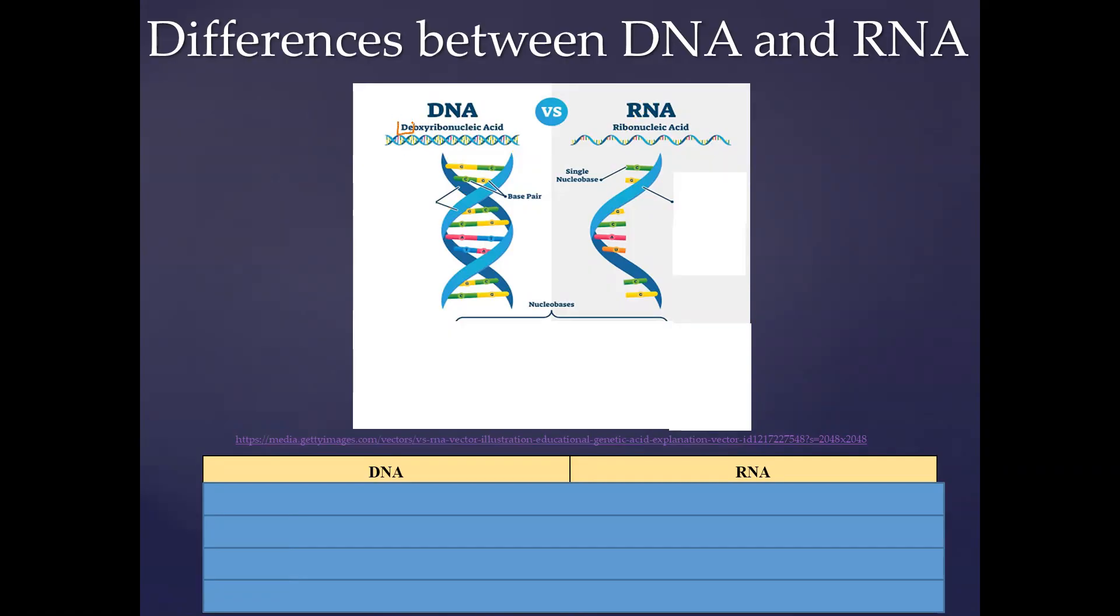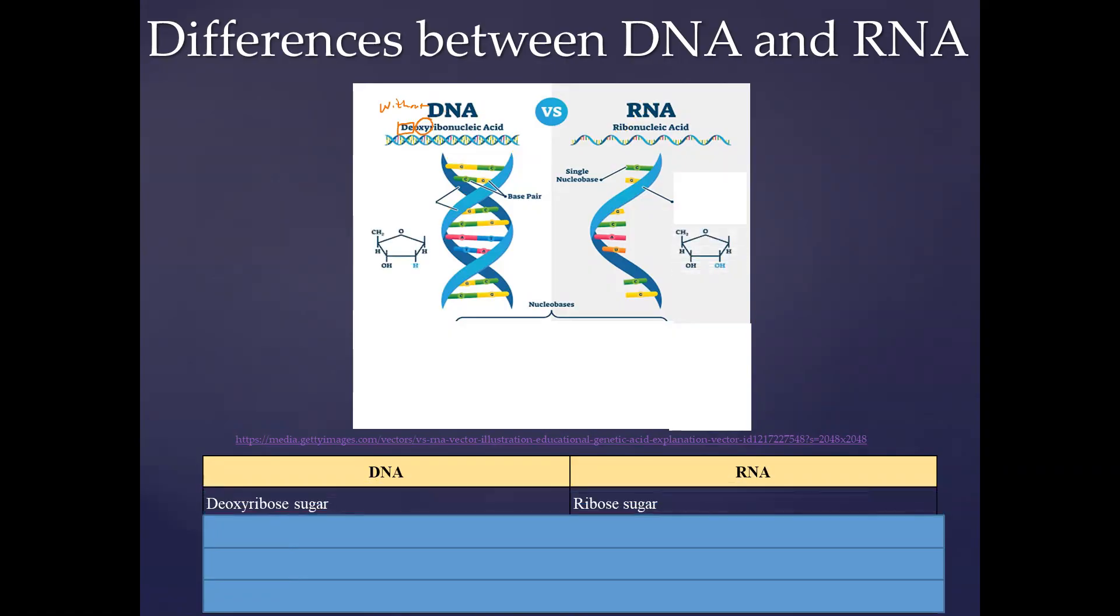Deoxyribose means without, and oxy refers to oxygen. So if we look at the sugar molecules of these two, we find that the sugar molecule of DNA has a hydrogen alone here, whereas that of RNA has an oxygen and a hydrogen, a hydroxide.